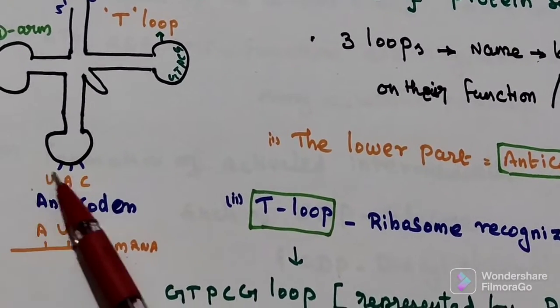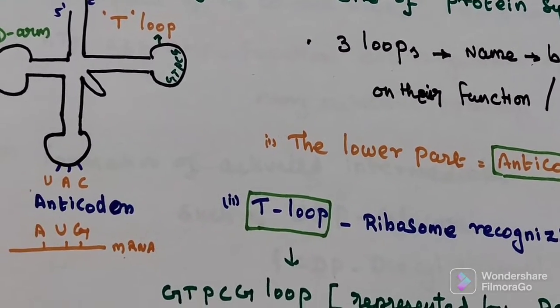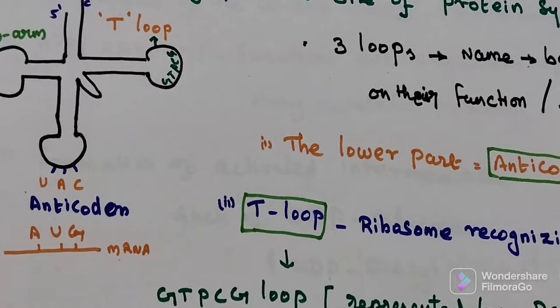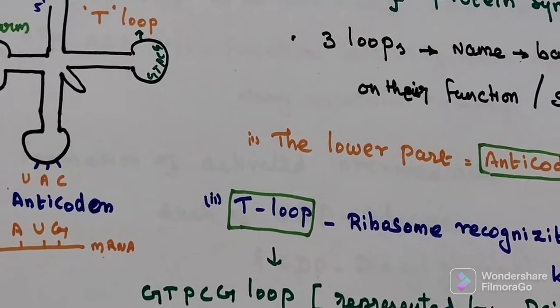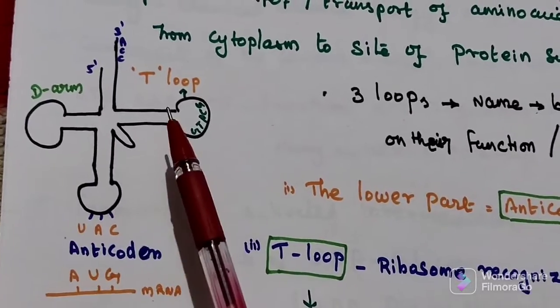For AUG, the anticodon is UAC. Here in mRNA, there's no thymine, only uracil. So it is called the anticodon loop.